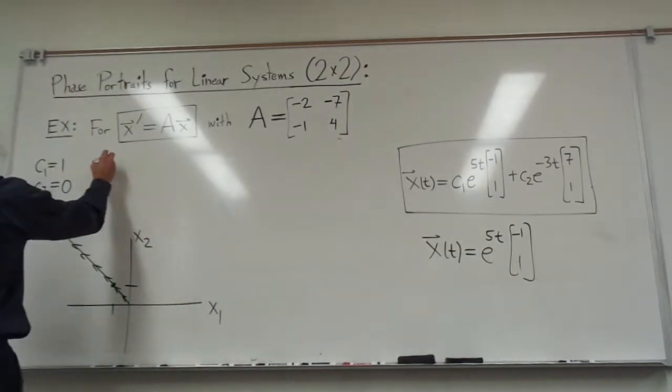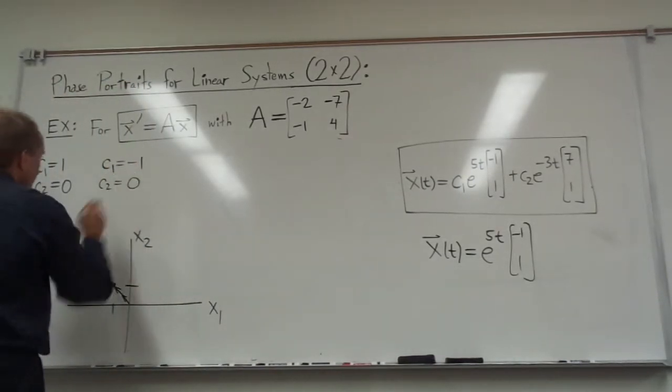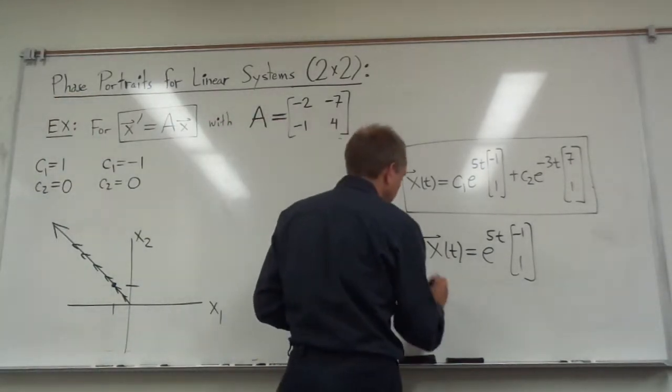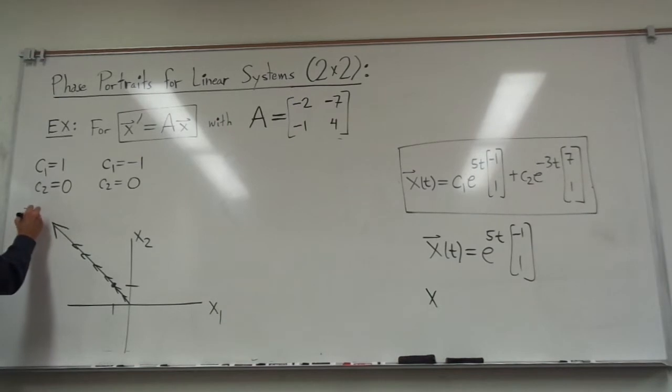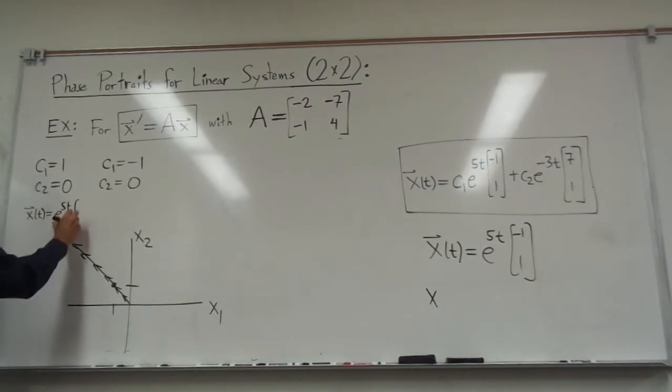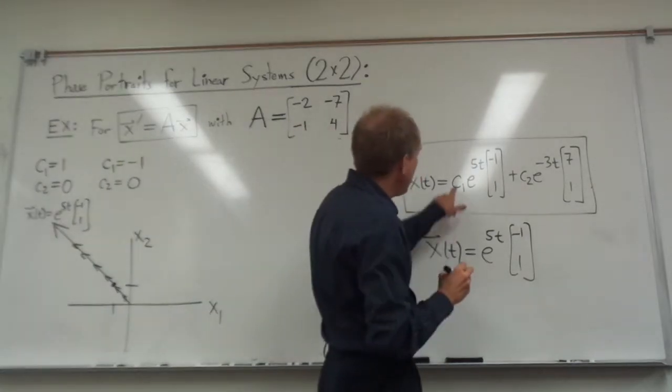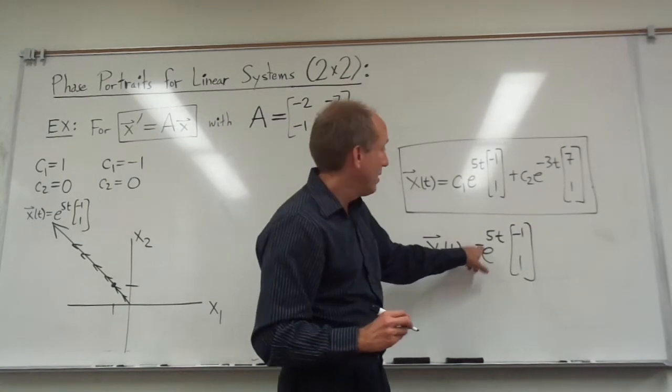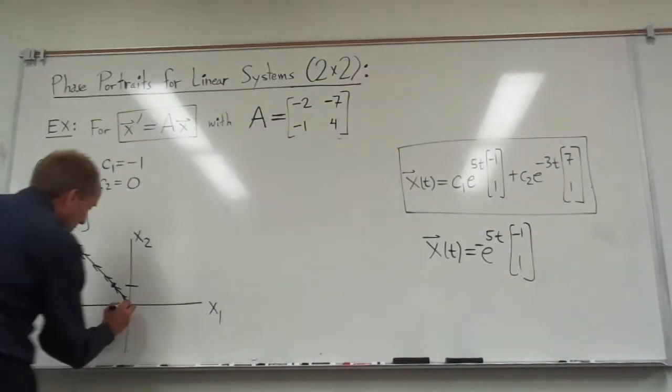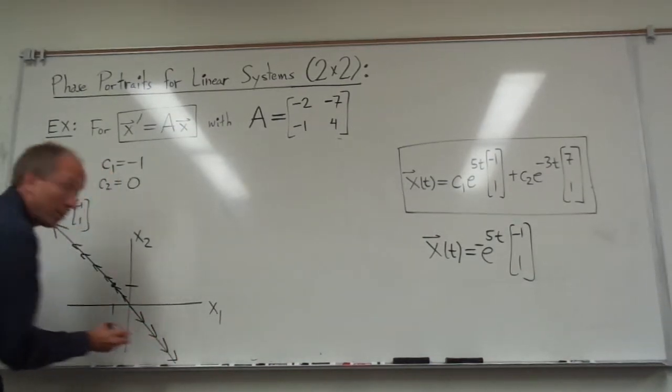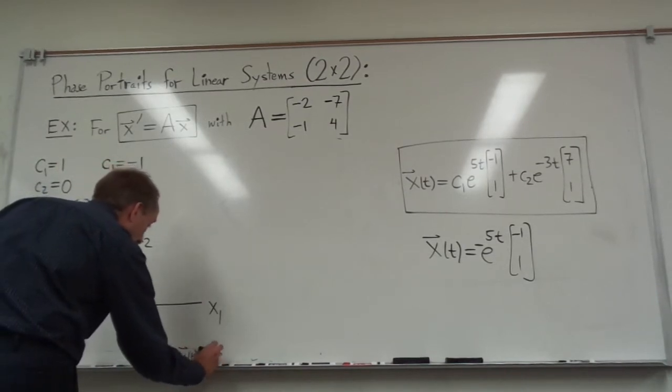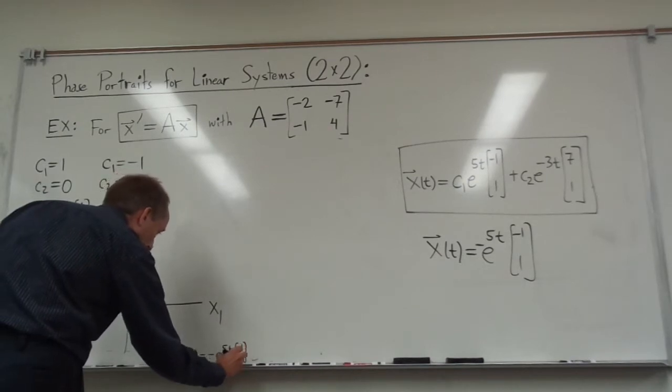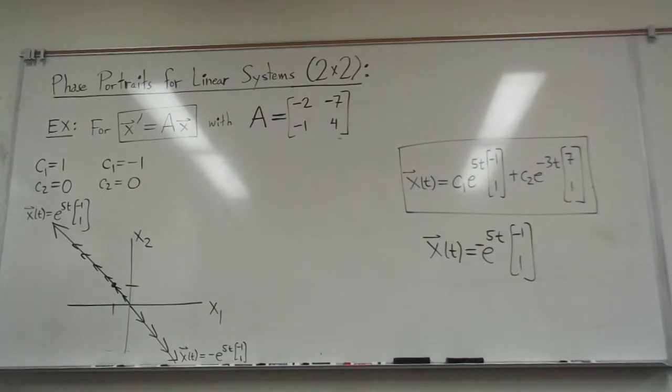Now what if I let c1 equal negative 1 and c2 equals 0. Now if I do that, I'm going to get a different solution now. So maybe I should, just over here, I'm just going to write down this is x of t equals e to the 5t times negative 1, 1. If I change c1 to negative 1, I'm just going to negate that vector. And that just means that my solution now is going to go exactly in the opposite direction. This curve going in the opposite direction here, this is the solution negative e to the 5t times negative 1, 1. So it would look just like that. So there's your second solution.